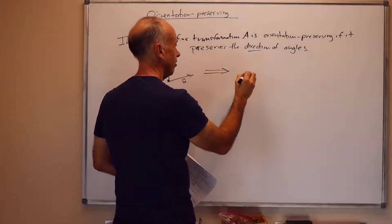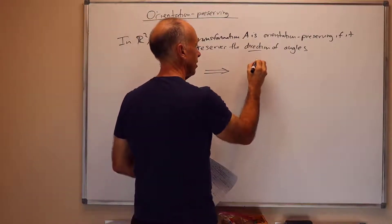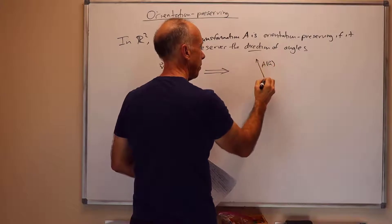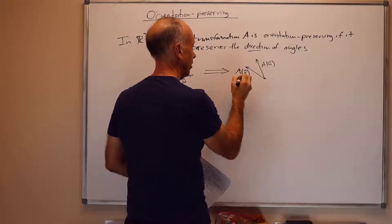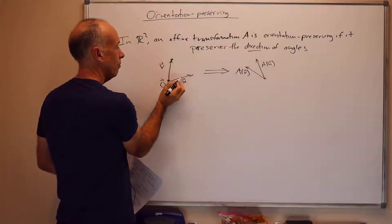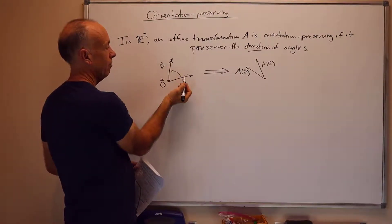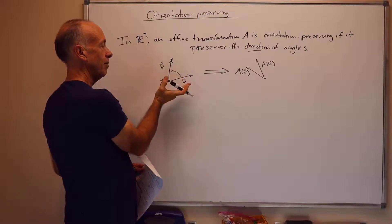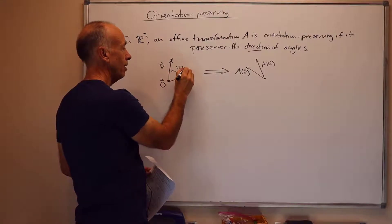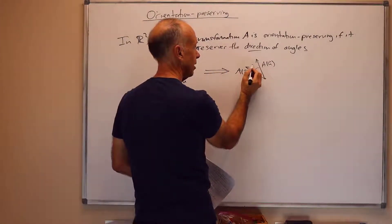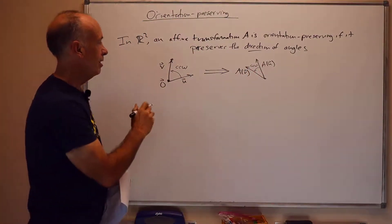We take the images, we look at the image of these two things under A. Now, it may not be rigid, so the angle magnitude might change. Maybe A of U is here, and maybe A of V is here with a smaller angle. But, U and V sitting in the XY plane, if you take the shortest angle from U to V, if they're not collinear, then there'll be some angle from U to V that's less than 180 degrees. We take the shorter angle from U to V, it's counterclockwise here, and likewise, if you look at the images, it's counterclockwise there. So, this is orientation-preserving.